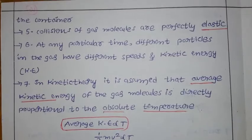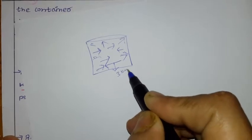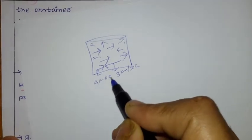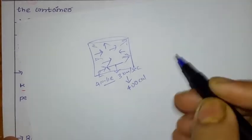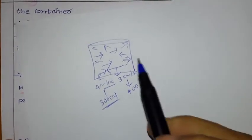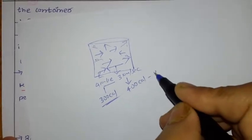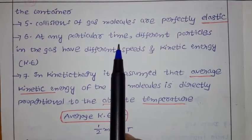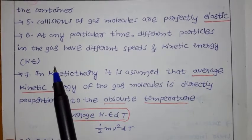The sixth assumption is: at any particular time, different particles in the gas have different speeds and kinetic energies. For example, one particle may have a speed of 3 km/s and another may have 4 km/s. Similarly, one particle may have kinetic energy of 400 calories and another 300 calories — so different particles have different speeds and different kinetic energies.